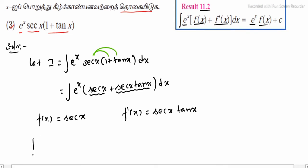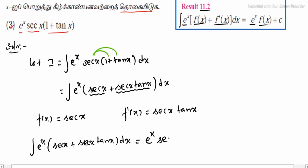Once again, we will write the sum. Integrating e power x, which is the multiple of f of x, one function plus its derivative, sec(x) into tan(x), dx. So the integral value is e power x into f of x. Therefore, f of x value is sec(x). Total, with constant C applied.